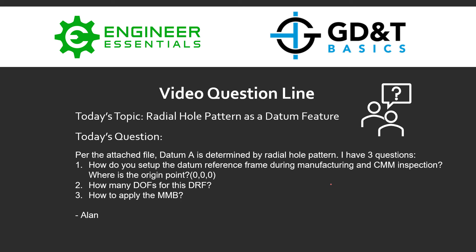Hey everybody, Jason here again with GD&T Basics. Today's video question is covering radial hole patterns as datum features. The question is: per the attached file, datum A is determined by a radial hole pattern.